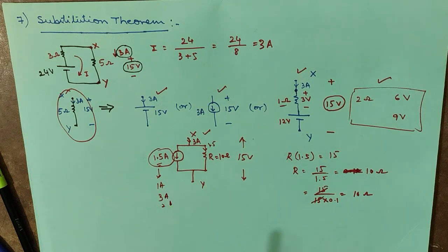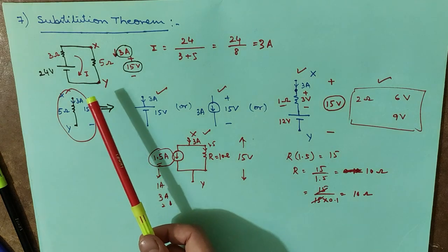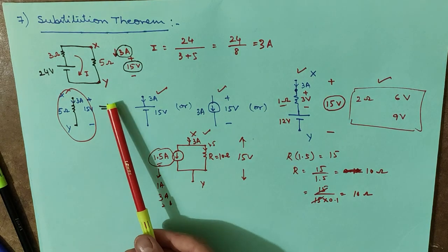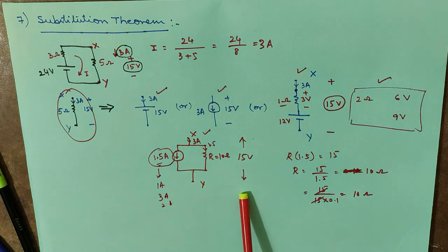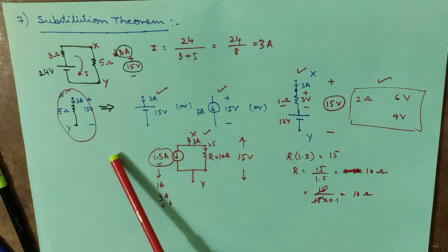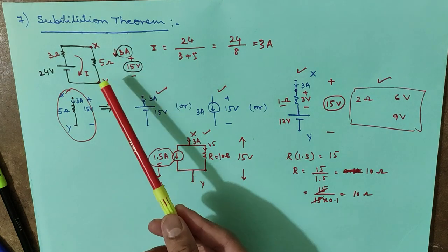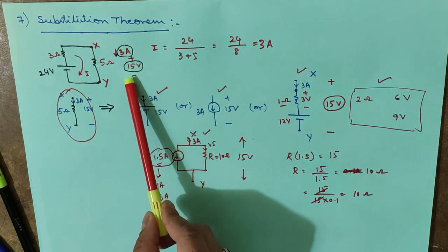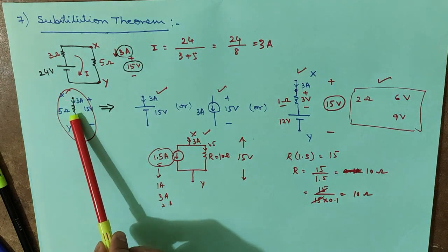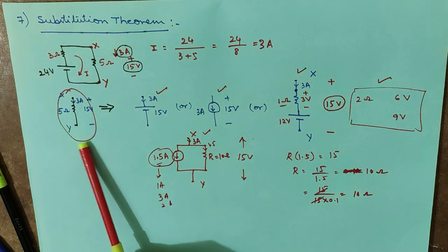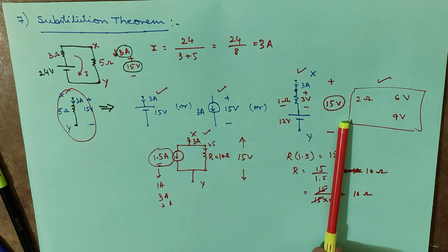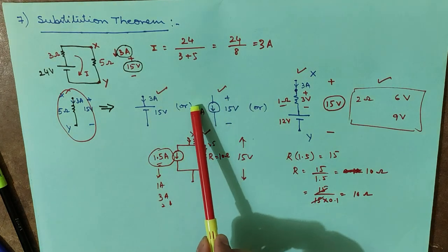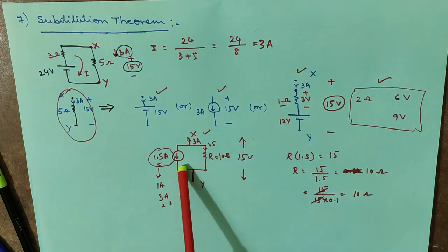To recap: the substitution theorem states that any branch of any network can be replaced with any number of elements in any combination, without changing the voltage across the branch and the current passing through the branch. In this example, the current is 3 amperes and the voltage is 15 volts, and all substitutions preserve these values.